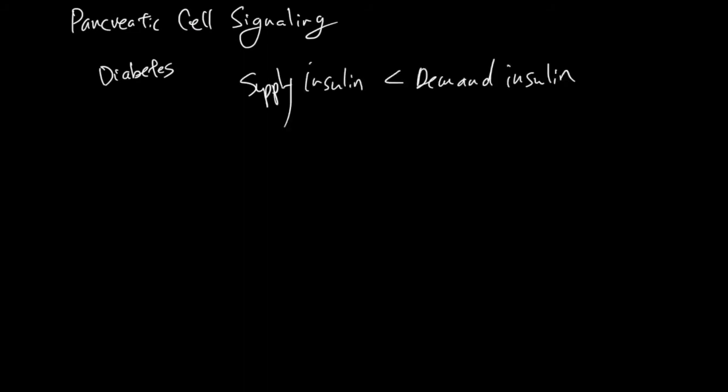Hi, this is Quatt and in this video I want to tell you about pancreatic cell signaling. Let's start from diabetes. Diabetes is a disease where cells can't use glucose. This happens when the supply of insulin is less than the demand for it.